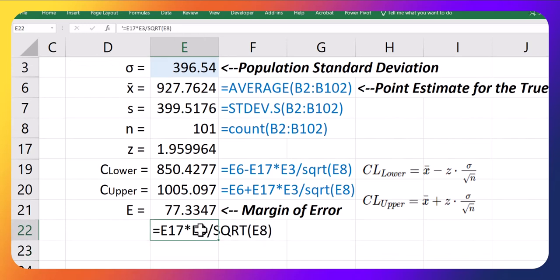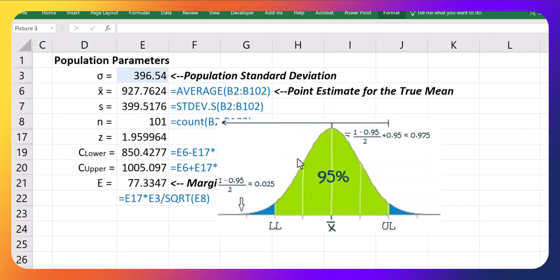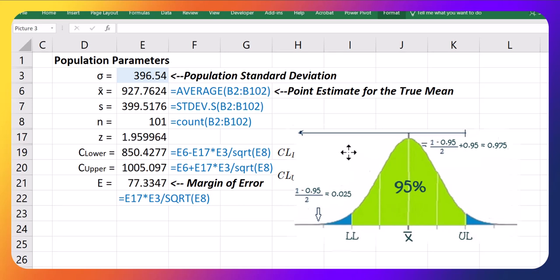That is what we're adding and subtracting from the mean, the sample mean, to get our interval. I'm just going to pause and pull up that picture one last time. Beautiful. So that margin of error, that we see the 77, that's how wide our interval is.